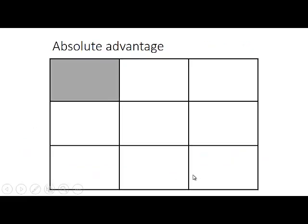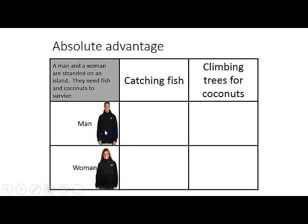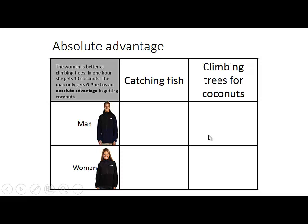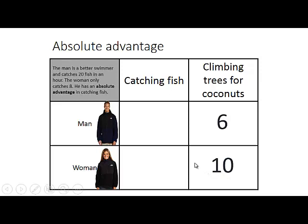Let's look at an example of absolute advantage. A man and a woman are stranded on an island. They need fish and coconuts to survive. The woman is better at climbing trees and can get 10 coconuts in an hour, while the man can get only 6 — so she has absolute advantage in getting coconuts. The man is a better swimmer and catches 20 fish in an hour, while the woman only catches 8 — so the man has absolute advantage in catching fish.